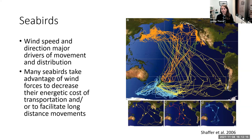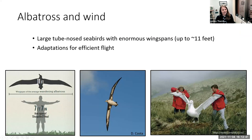Albatrosses have a particularly special relationship with wind. They are large tube-nosed seabirds with enormous wingspan — up to about 11 or 11.5 feet in the case of wandering albatrosses — comparable to the armspan of Shaquille O'Neal, just to give you an indicator of size. In addition to adaptations all flying birds share, like hollow strutted bones and increased bone fusion for structural rigidity, albatrosses have unique adaptations such as a tendon between their elbow and shoulder joints that allows them to lock their wings in place while gliding. They also have long, narrow wings to facilitate gliding flight, as well as some behavioral adaptations we'll talk about in just a moment.